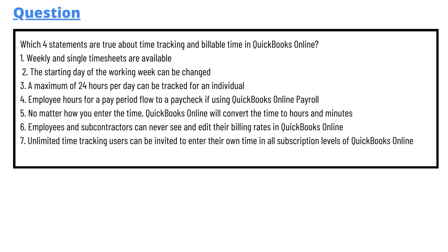Option one: weekly and single time sheets are available, and the starting day of the working week can be changed. Option two: a maximum of 24 hours per day can be tracked for an individual employee. Option three: hours for a pay period flow to paycheck if using QuickBooks Online Payroll. Option four: no matter how you enter the time, QuickBooks Online will convert the time to hours and minutes. Option five: employees and subcontractors can never see and edit their billing rates in QuickBooks Online Unlimited. Option six: time tracking users can be invited to enter their own time in all subscription levels of QuickBooks Online.